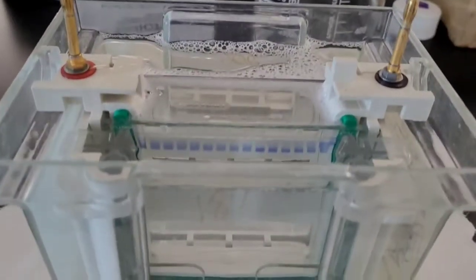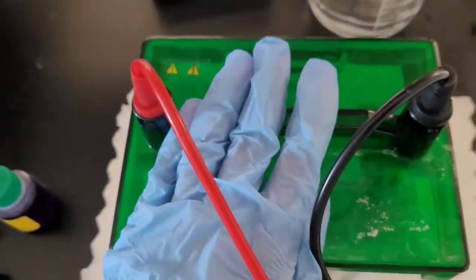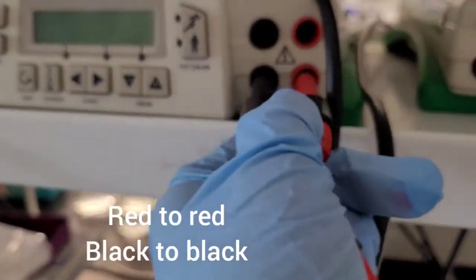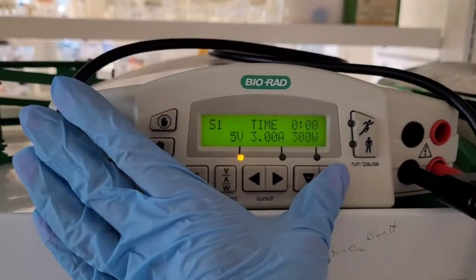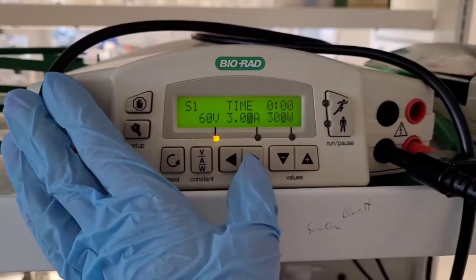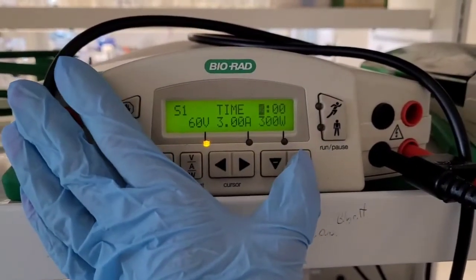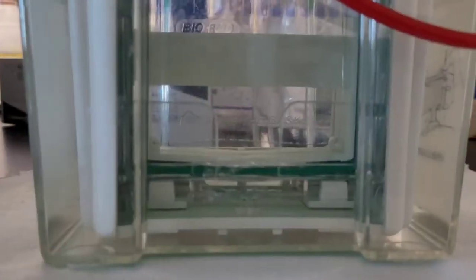Then connect red to red and black to black. Turn on the Bio-Rad machine and start with 60 volts. Do that until the protein enters the resolving gel—this way it will be more linear.